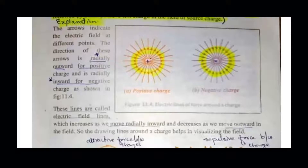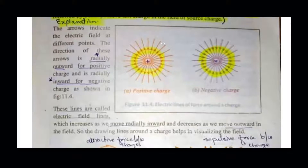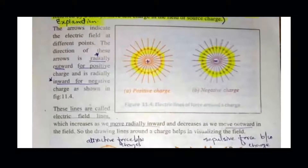For the positive charge, electric field lines are drawn radially outward because a positive charge is always at higher potential. We always draw arrows pointing outward, originating from the positive charge. If there is a positive charge, the electric field points outward. For the negative charge, the arrows point inward.